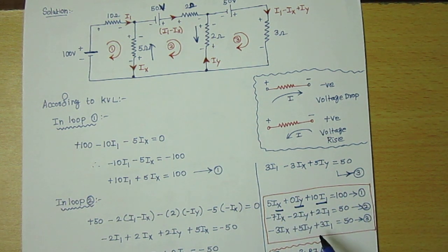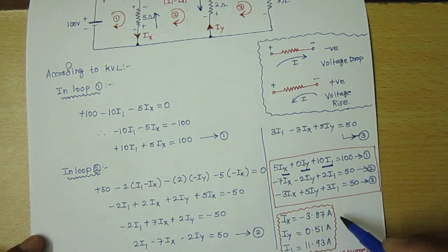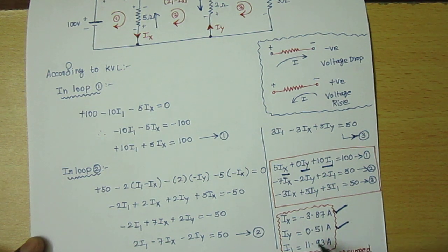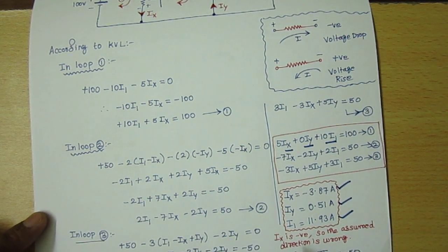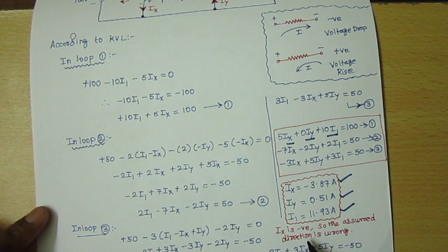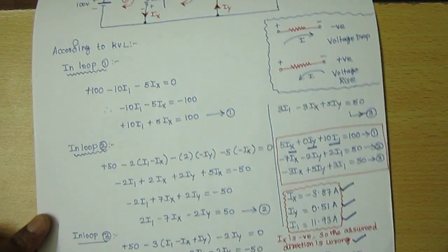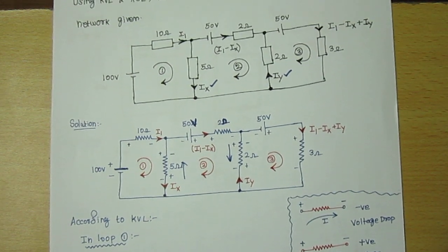Substituting these values into a calculator in equation mode, we get Ix = −3.87 ampere, Iy = 0.51 ampere, and I1 = 11.93 ampere. Since Ix is negative, our assumed direction for Ix is wrong — this is our conclusion. I hope this video was very useful for you. Please subscribe, hit the like button, and thank you for your support.